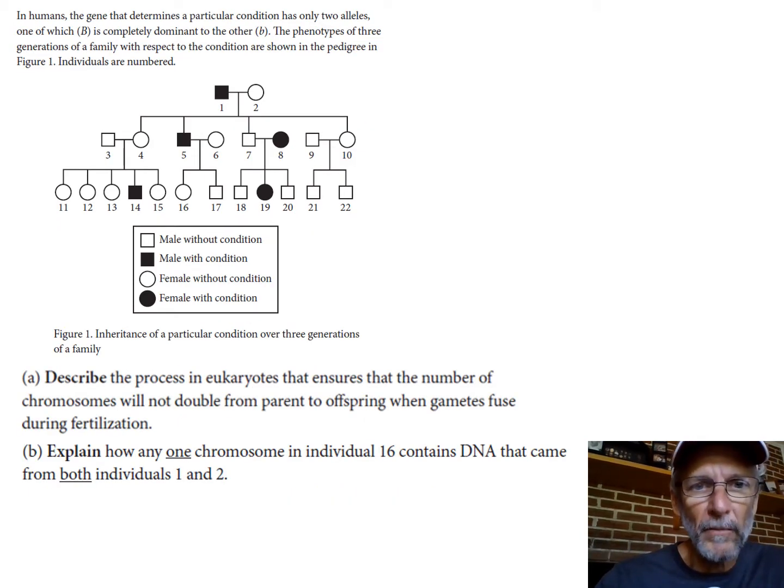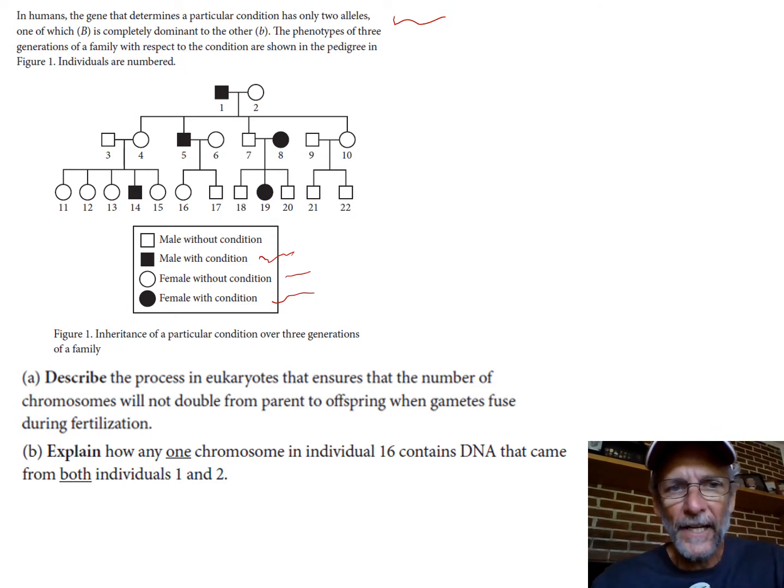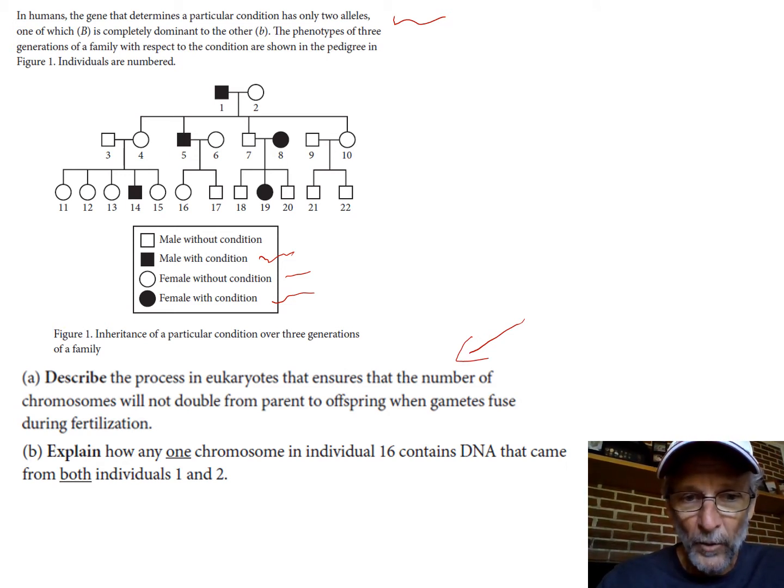So here we have a pedigree which they promise they might give you. They tell you there's only two alleles here, Big B completely dominant to little b. They don't ask you to figure that out. Phenotypes in terms of do they have this condition or do they not have this condition. They number all these, and the first thing they ask you doesn't really have anything to do directly with it but describe the process in eukaryotes that ensures the number of chromosomes will not double from parent to offspring when these two gametes come together.